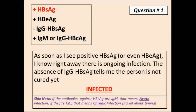Hepatitis B is all about the surface antigen. Whenever there is a serology question, the first thing you should do is look at the presence of the surface antigen and antibodies against the surface antigen. As soon as I see a positive hepatitis B surface antigen, I know right away there is an ongoing infection. The absence of antibodies against the surface antigen tells me the person is not cured yet — therefore this is a serology of an infected person. If the antibodies against the core antigen are IgM, that means this is an acute infection. And if they are IgG, that means this is a chronic infection.